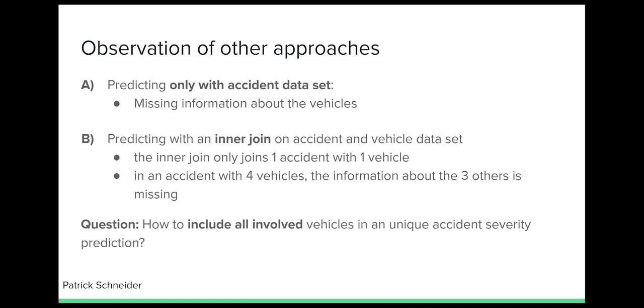Some other approaches made an inner join between the car accident dataset and the vehicles, where only one vehicle information was considered for the prediction. In the case of an accident with four cars, the info about the other three vehicles is missing. Online research showed that there are no standard solutions for such a scenario. Here I set my biggest work focus on providing a unique prediction with specific N vehicle details.